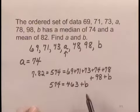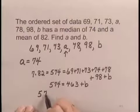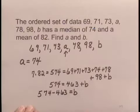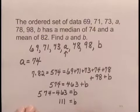Now you can see that b has to be the difference of 574 minus 463 equals b. And doing the subtraction, b has to be 111.